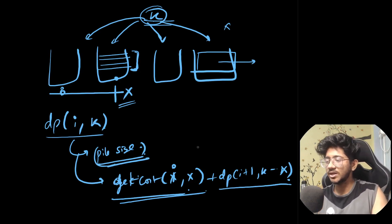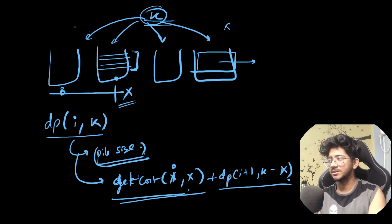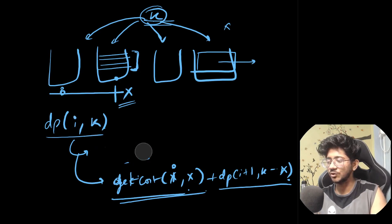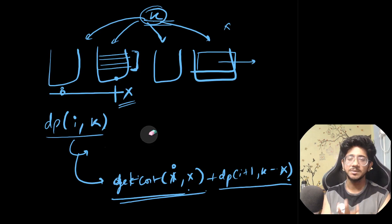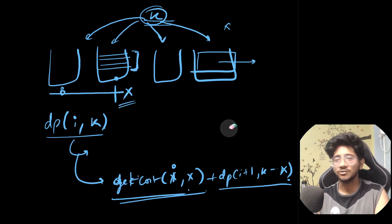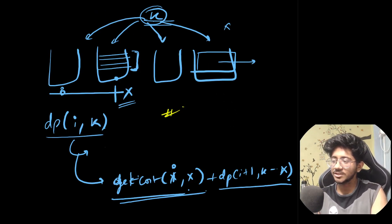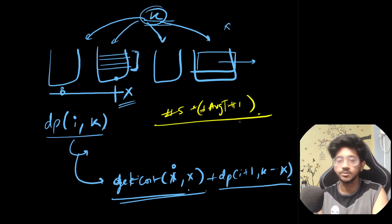Now let's analyze the complexity of this DP — this is where it gets very interesting. The rule for analyzing time complexity is: number of states multiplied by average number of transitions per state. How do you calculate average transitions for this problem? It's not as easy as it seems.